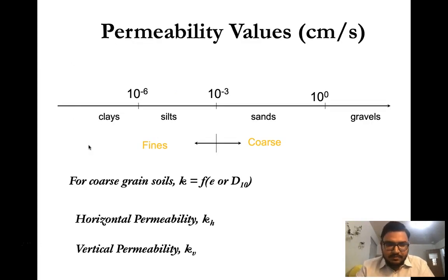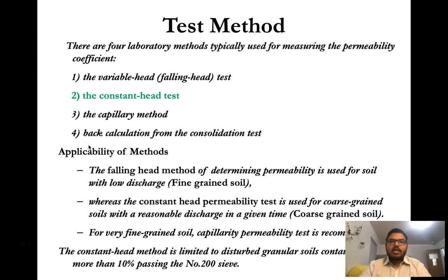There are two types of permeability: horizontal permeability and vertical permeability, depending on the direction of flow. If the fluid flows towards gravity, it's called vertical permeability, and if it flows perpendicular to gravity, it's called horizontal permeability. There are different kinds of laboratory methods used to determine the permeability coefficient.